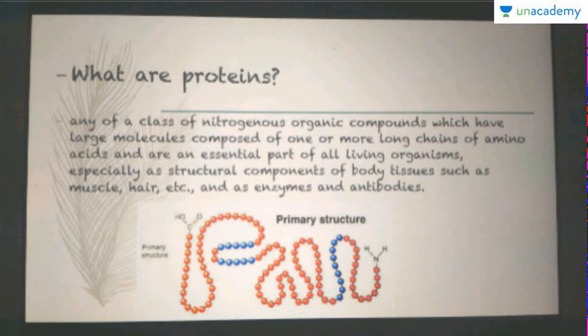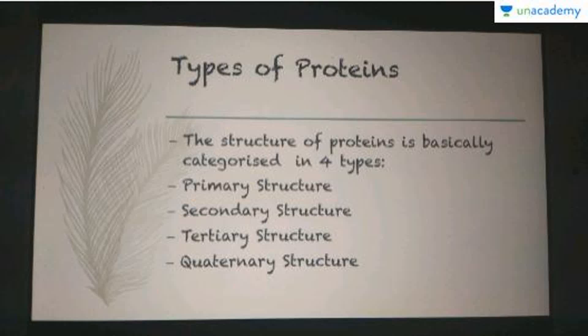As a diagram, I have given the primary structure of a protein and you can easily see the NH2 group or the amino group on one side and the carboxyl group on the other side. The definition says they are an essential part of living organisms — for muscle the proteins are actin and myosin, for hair it's keratin, as enzymes almost all enzymes relating to the alimentary canal are proteins, and antibodies as well.